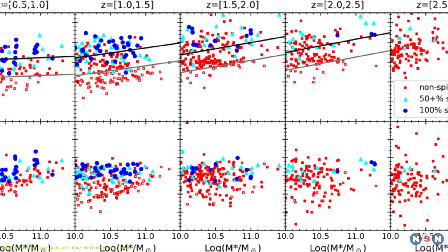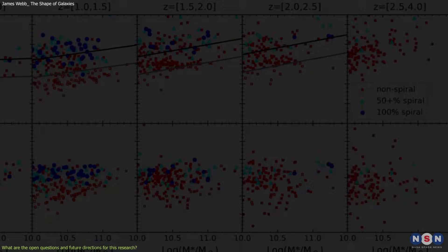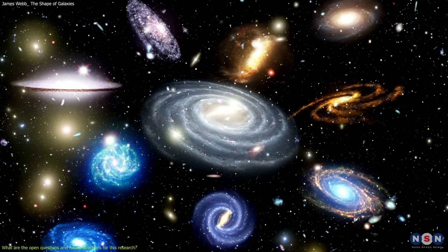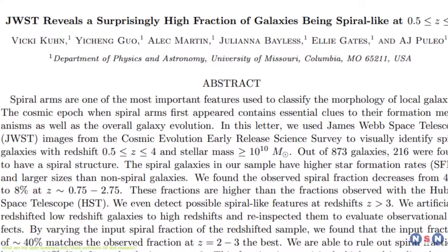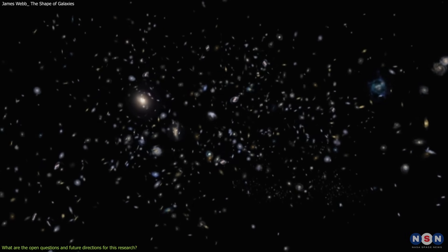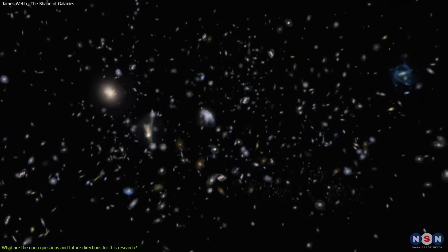Some of the limitations and uncertainties are the sample size. It analyzed 873 galaxies, which is a relatively small number compared to the millions of galaxies that exist in the universe. This means that the study may not be representative of the whole population of galaxies and may be affected by statistical errors or biases.